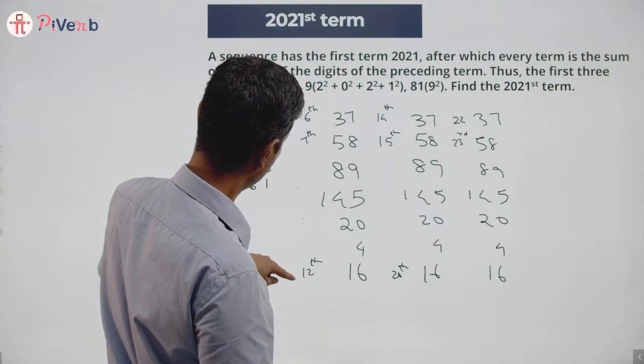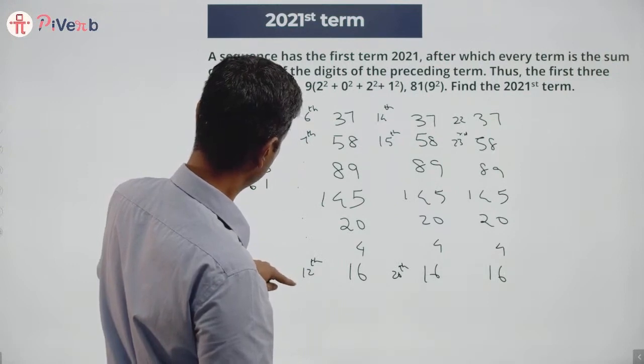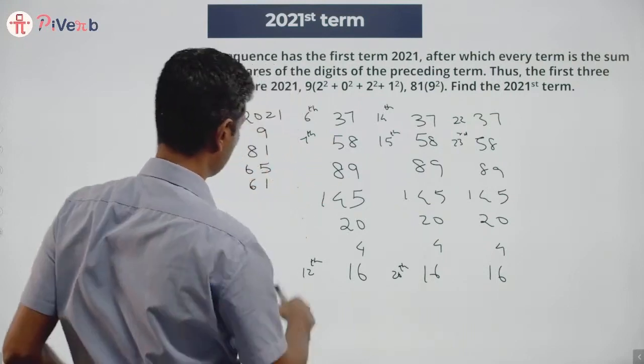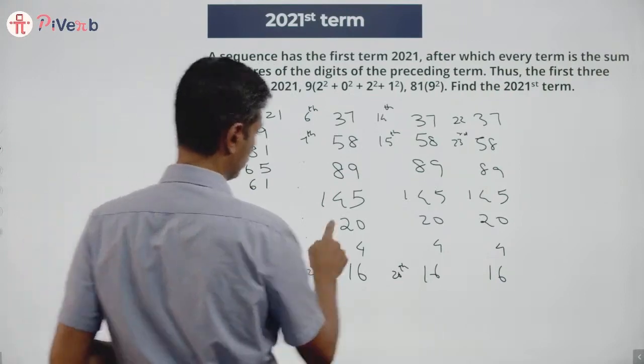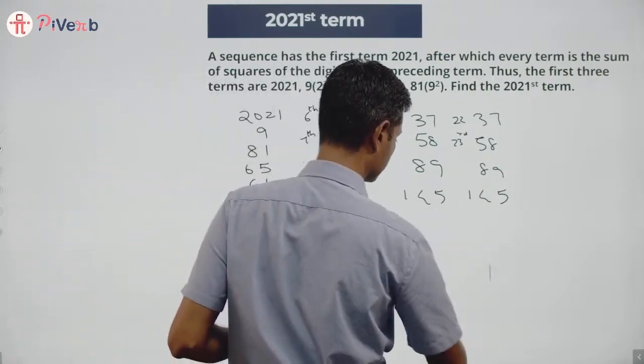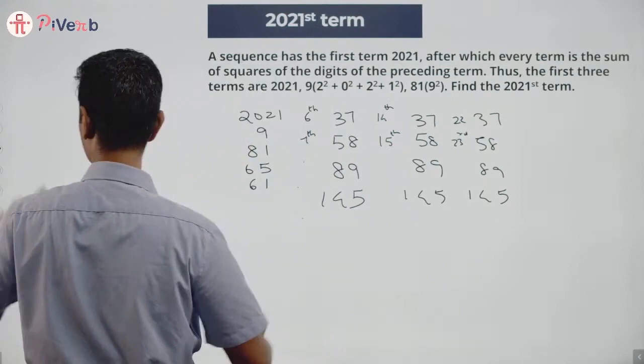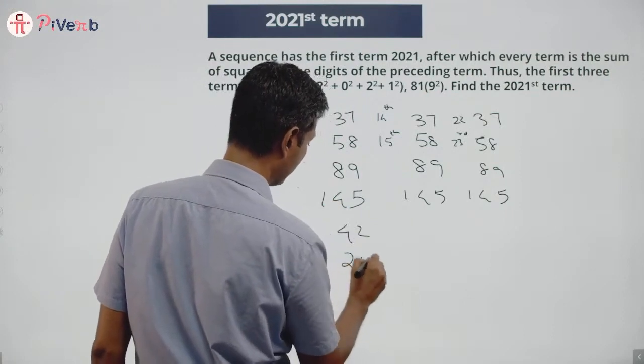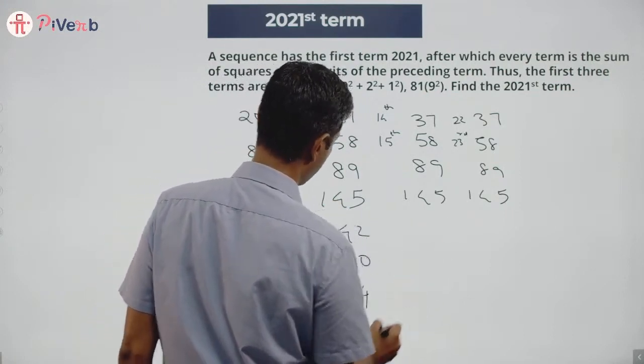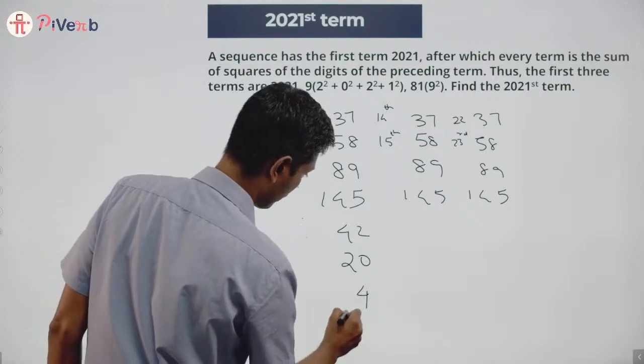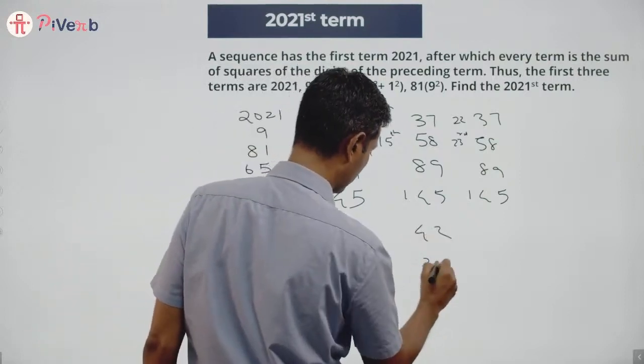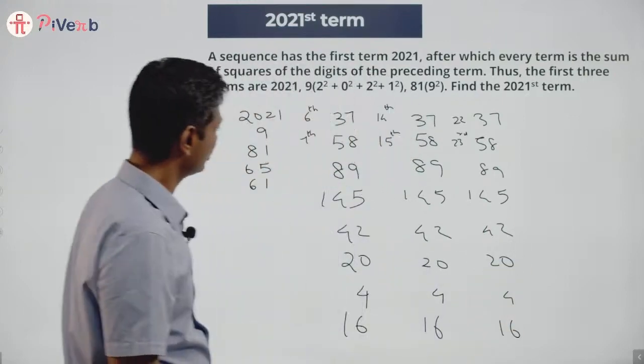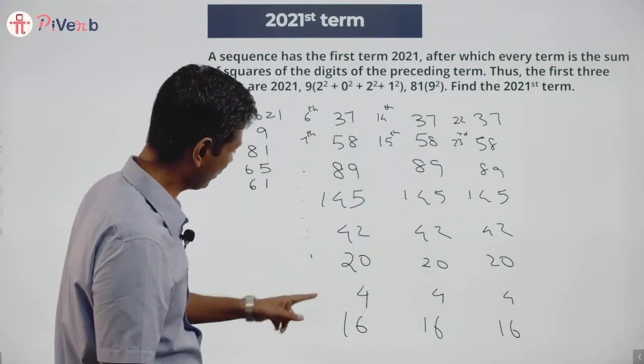Wait, one second, maybe I missed a number. 37, 58, 5²... 89, 145... I'm missing a number after 145. After 145 I have 42, then 20, then 4, then 16. So 6, 7, 8, 9, 10, 11, 12, 13th, 21st, 29th, and so on.